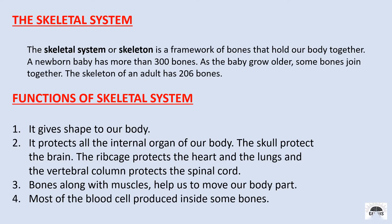The skeletal system. Our skeleton is a framework of bone that holds our body together. A newborn baby has more than 300 bones. As the baby grows older, some bones join together, so an adult has only 206 bones.